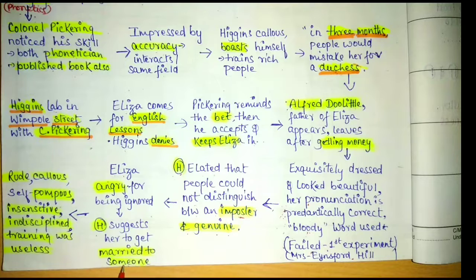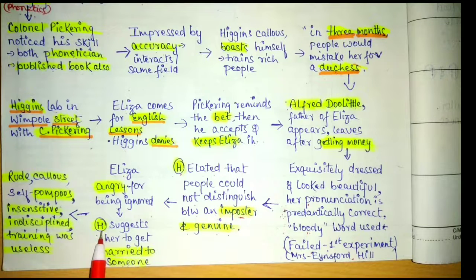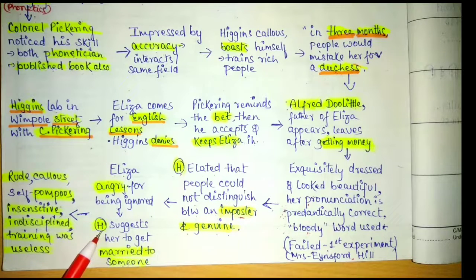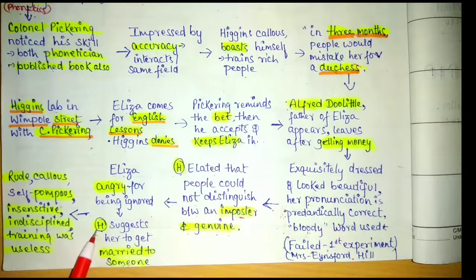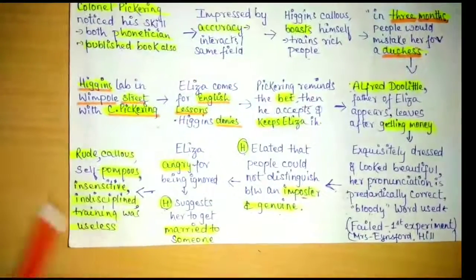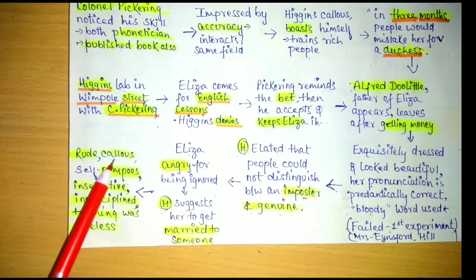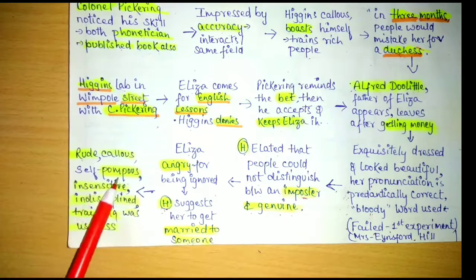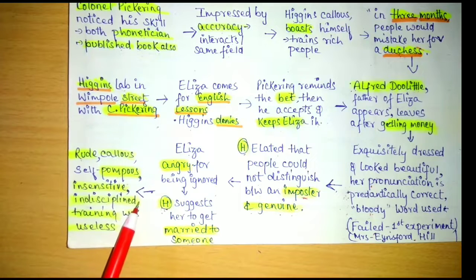She had a hot verbal battle with Higgins. Then Higgins so insensitively suggests that she should get married to someone, because he thinks the requirement for getting married is that a girl should be beautiful, young, have elite manners, good etiquette, and polished mannerism — all of which Higgins claims to have already instilled in her.